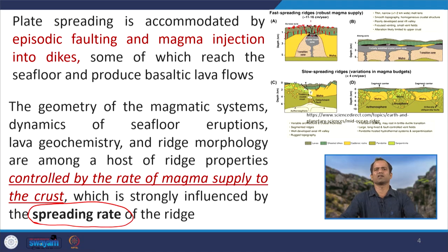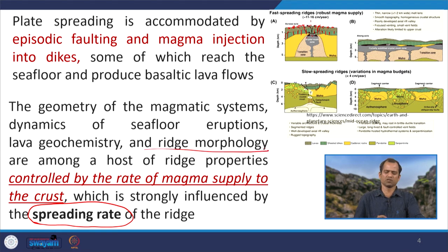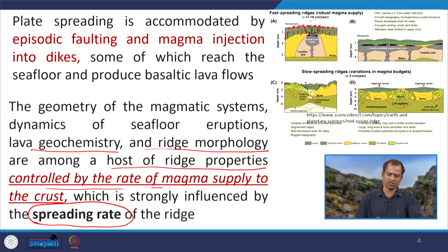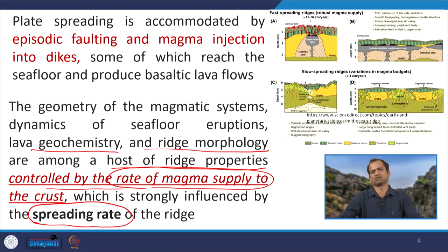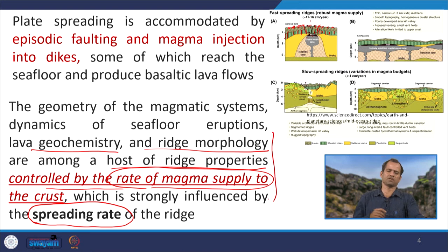In the mid-oceanic ridge system, geomorphology, geology, geophysics, and gravity are all controlled by spreading rate. The morphology of the mid-oceanic ridge, the geochemistry of the magma, and the ridge properties are totally controlled by the rate of magmatic supply. The rate of magmatic supply is proportional to the rate of spreading: high spreading rates like the East Pacific Rise have high magmatic supply, while low spreading ridges like the Mid-Atlantic Ridge and Indian Ocean Ridge have lower magmatic supply, giving different geochemistry, geomorphology, and geophysics.